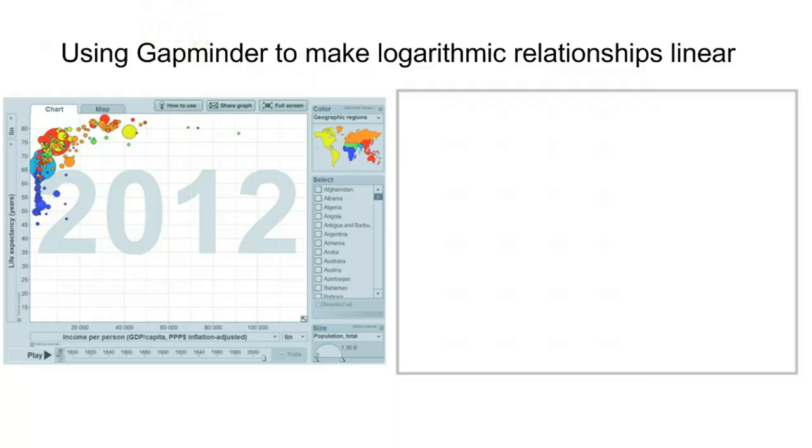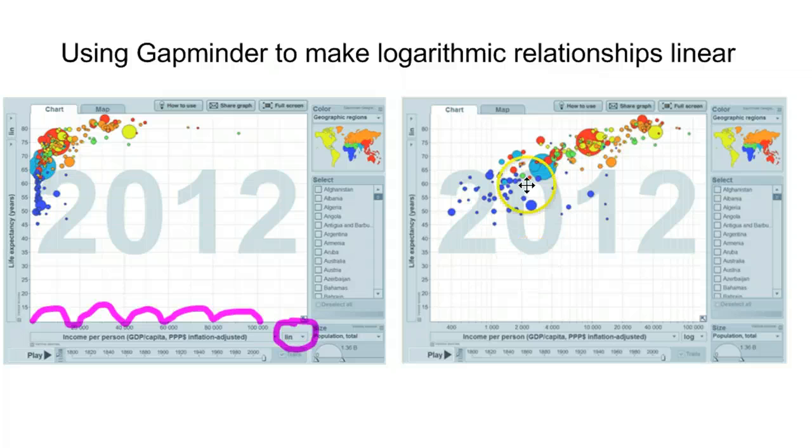Now, in Gapminder, what you do is you have an option down here to change something from being linear to being logarithmic. And that means instead of adding a constant amount every single time, so in this case, it looks like you go from 0 to 20,000 to 40 to 60 to 80 to 100, you're adding $20,000 of income at each level. You're going to instead, when you change it to logarithmic, make it so that you multiply by the same thing every time.